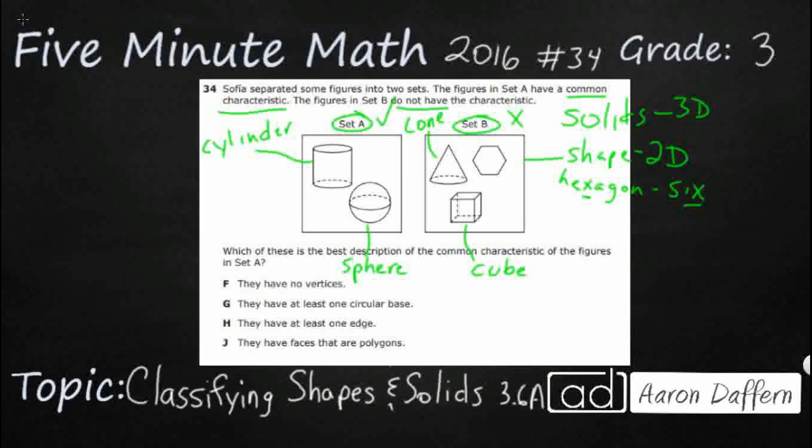So set A has no vertices. Now remember, when we're finding these things, it needs to be true for set A and then false for set B.